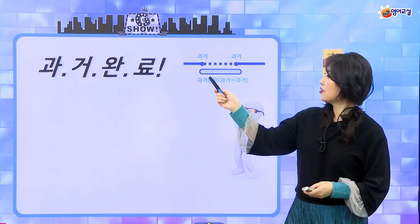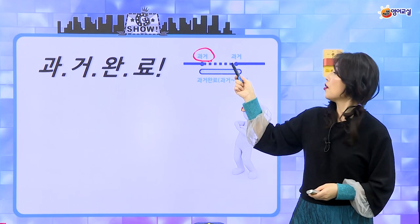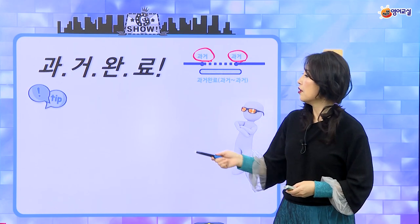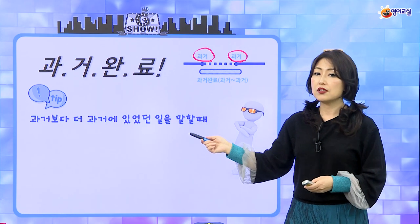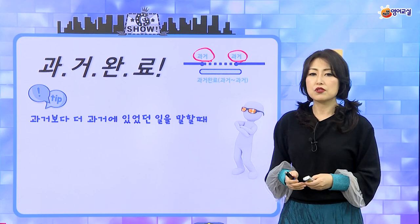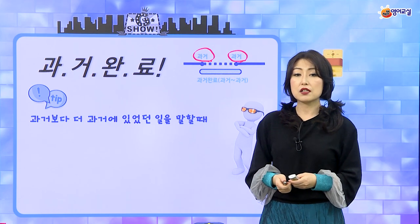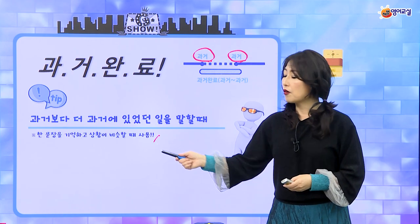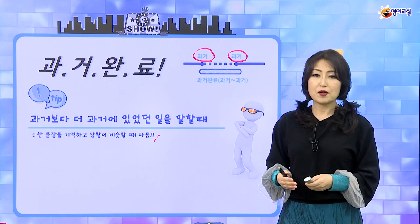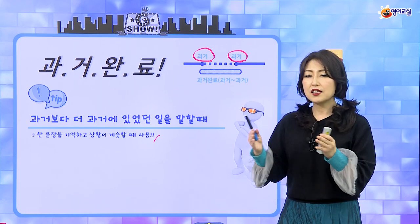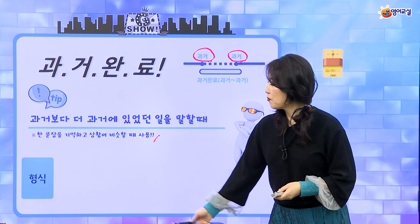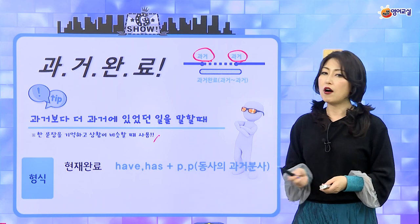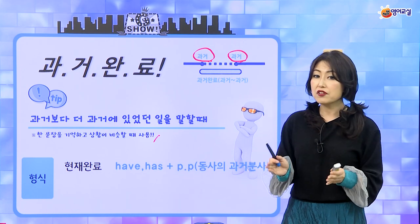과거 완료는 어떤 의미냐면 과거에 어떤 일이 시작되어서 과거에서 계속 이어지는 순서들을 이야기해요. 과거보다 더 과거에 있었던 일을 말할 때 우리는 과거 완료를 주로 쓰죠. 완료 시제에 큰 팁은 한 문장을 기억하고 상황이 비슷할 때 그것을 사용하면 돼요. 현재 완료는 have/has 플러스 동사의 과거 분사형이 기본형이었잖아요.